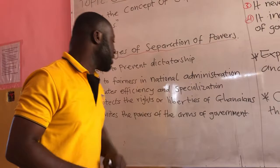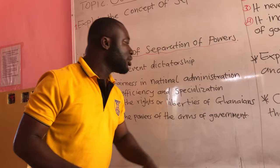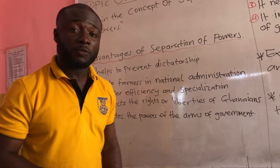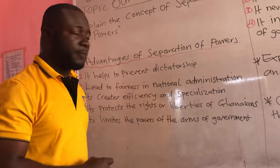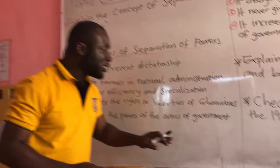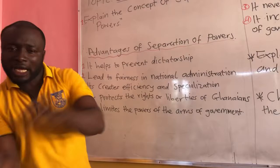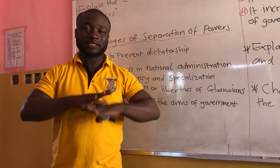Another advantage is that it protects the rights and liberties of Ghanaians. Your liberty or right is protected because any time your right is abused, you know where to go — straight to the judiciary, which is a court. If you want a law to be made, you know where to go — that's the legislature. It also limits the powers of the arms of government, preventing one arm from becoming more powerful than the other. The three arms of government must all be on the same scale.